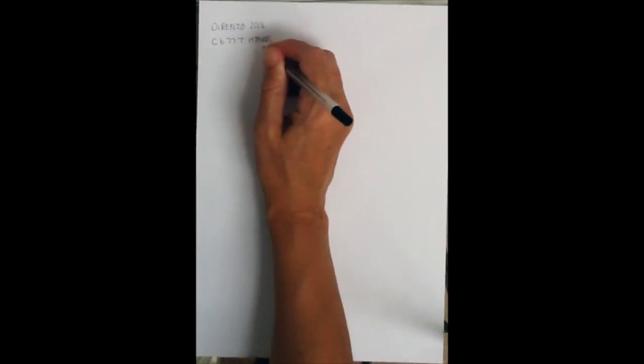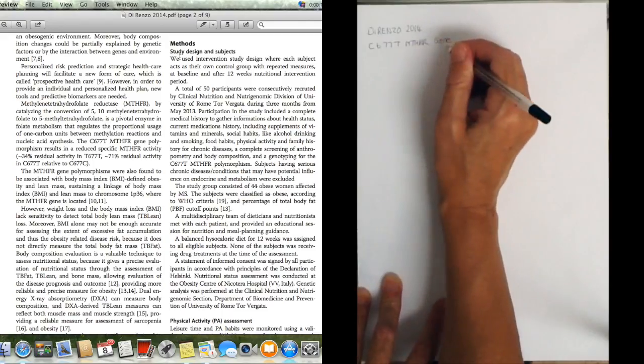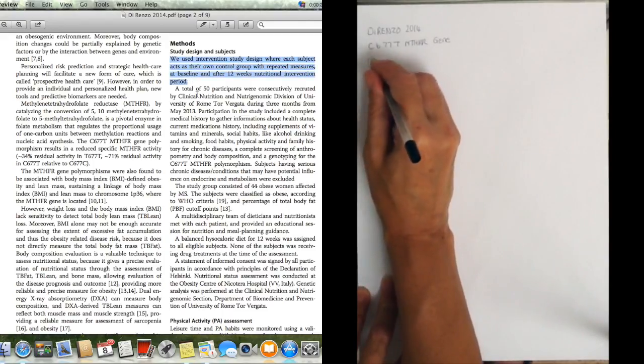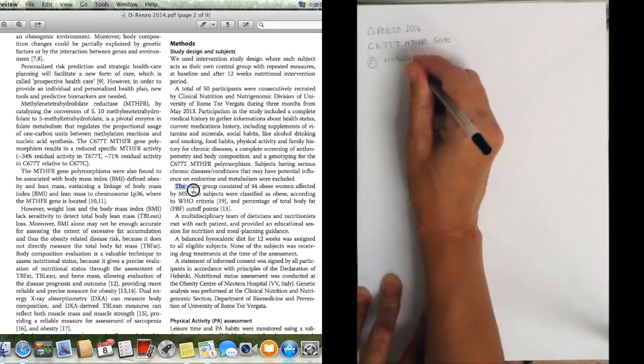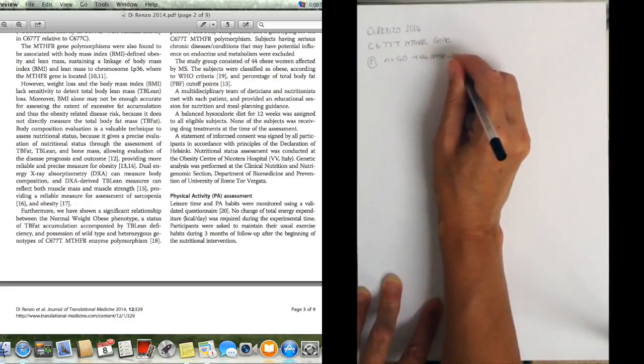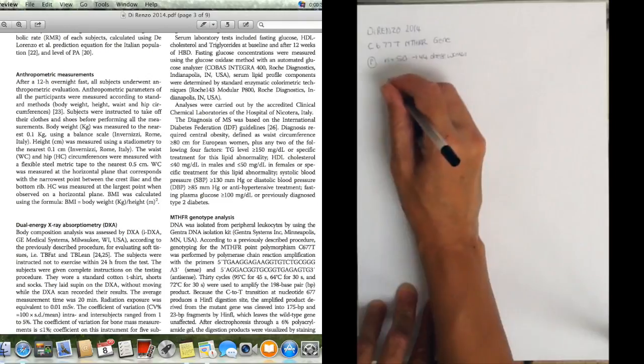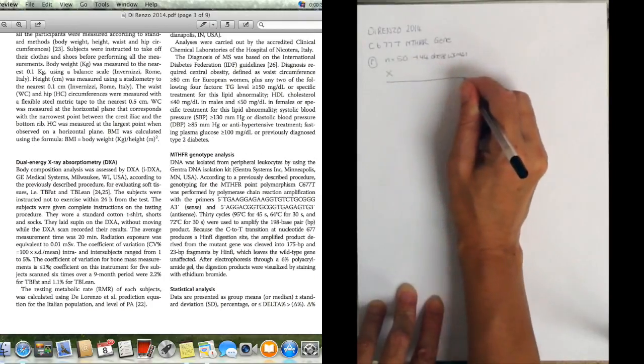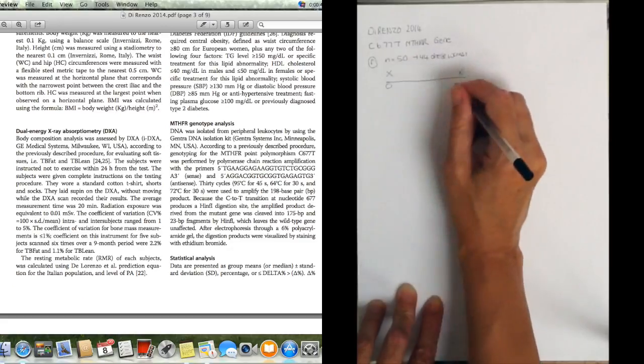So this is Dorenzo 2014. I've got the genetic information they're interested in here. In the methods, they're measuring for 12 weeks. They start off with 50 participants, but then the actual ultimate group was 44 obese women. You can see I'm just scribbling that down under my population group here. They're taking a baseline and it's a 12-week study.